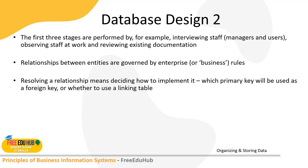The first three stages of database design are performed by interviewing staff and managers, observing staff work, and reviewing existing documentation. The relationships between entities are governed by enterprise business rules. Resolving a relationship means deciding how to implement it — which primary key will be used as a foreign key and whether to use a linking table. Not all tables require a foreign key linkage; this is defined based on current business needs.